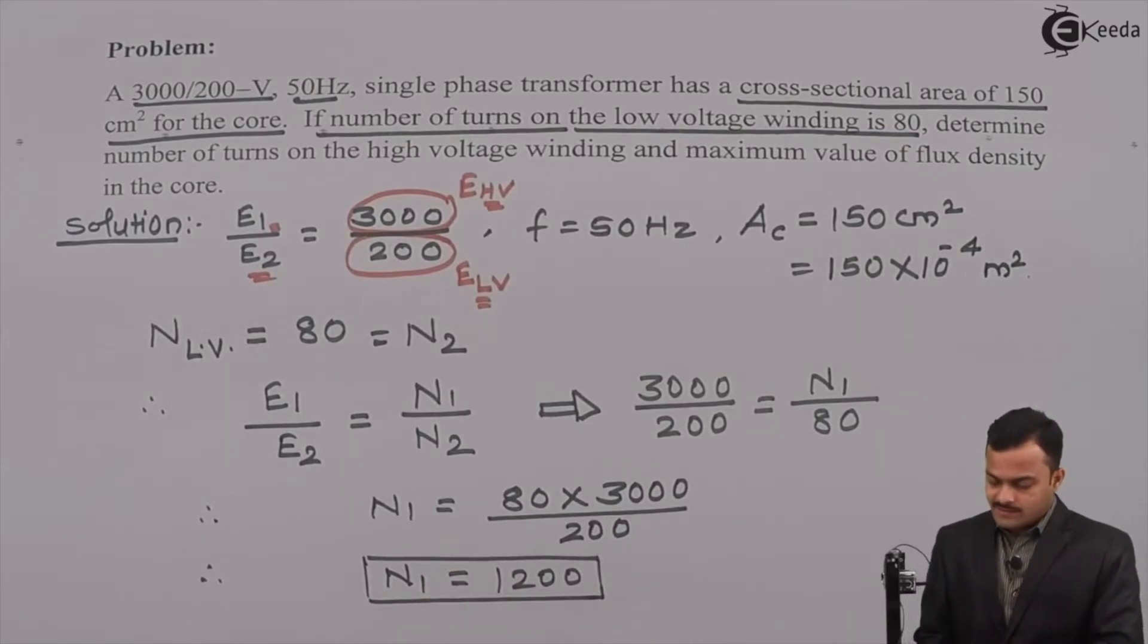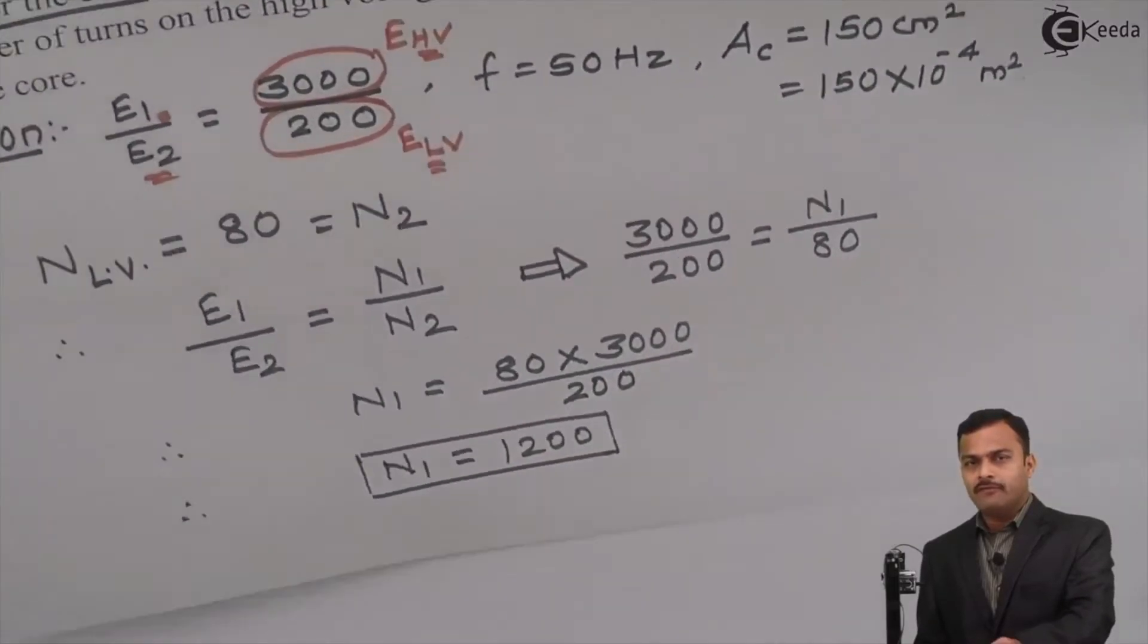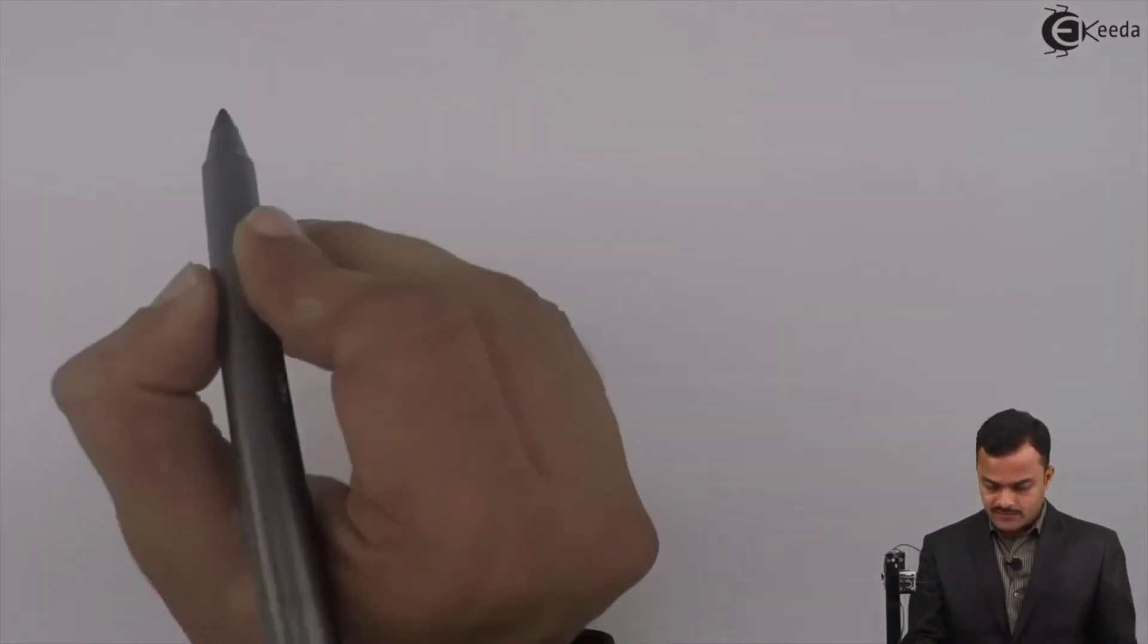Let's calculate second entity, that is maximum value of flux density in the core. For that purpose I should know what is the maximum flux in the core. To get Phi M, I will use EMF equation of a transformer.